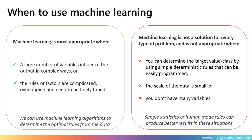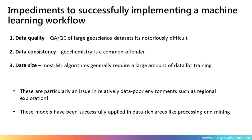Where machine learning is really going to help us is when we've got lots of data and we don't know the rules we need. Some of the things that come in the way of implementing these types of workflows are data quality, consistency, and size.